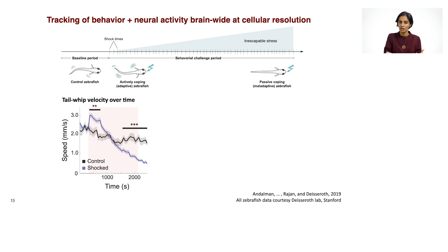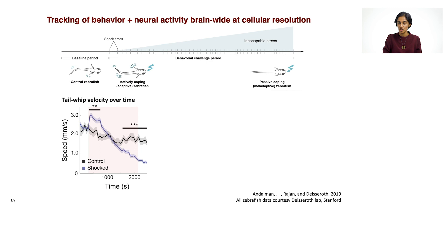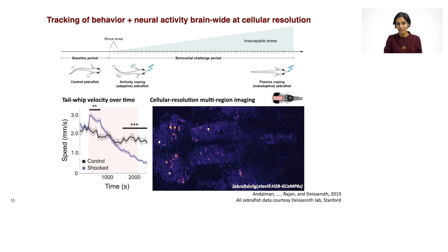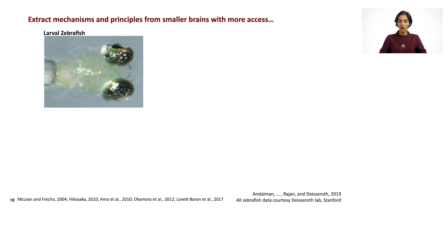When the shocks first come on, there's an elevation in the tail whips that you see in the blue trace over the black. Over a period of time as the shocks build on, the animal perceives this as persistent and inescapable stress and lapses into the state called passive coping, in which the tail whips in the shocked fish fall much below the velocity of the control fish. In Carl's lab, they also expressed nuclear localized GCaMP, which means we're able to monitor cellular resolution activity in the whole brain of these fish during this entire experiment, which lasts several minutes.